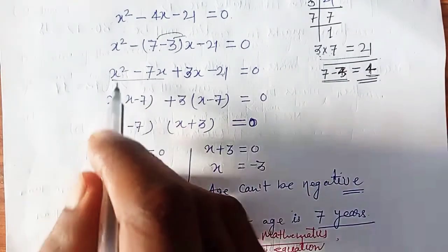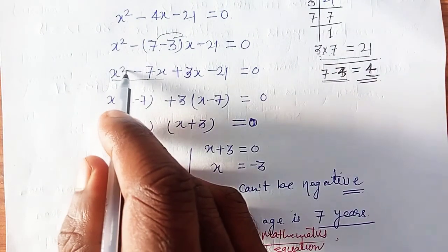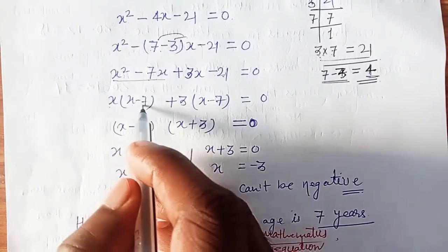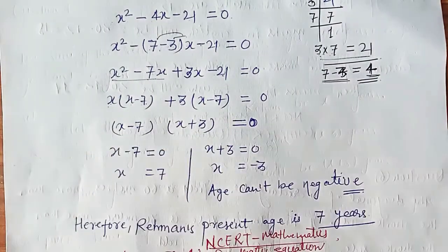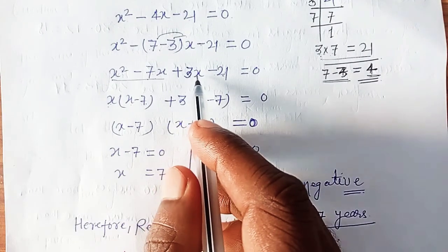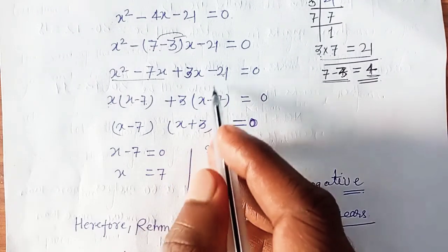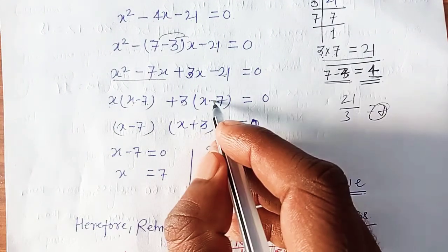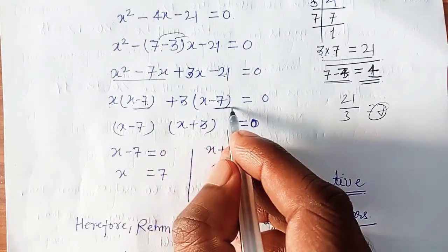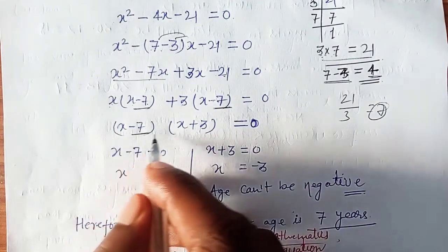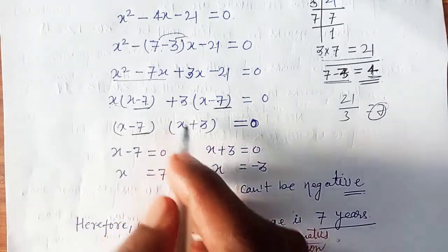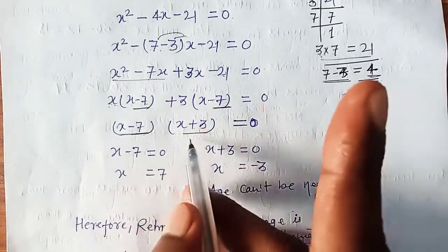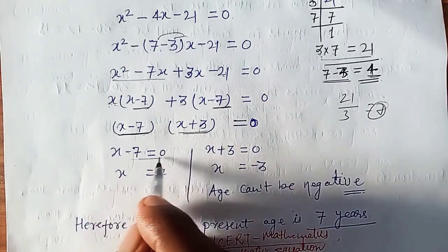Taking x common from the first two terms: x(x minus 7), and taking 3 common from the last two terms: 3(x minus 7). So we get (x minus 7)(x plus 3) = 0.